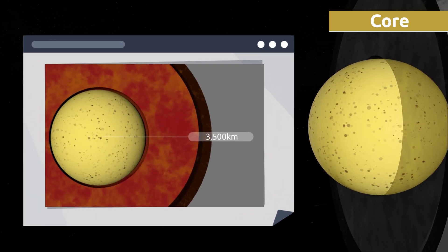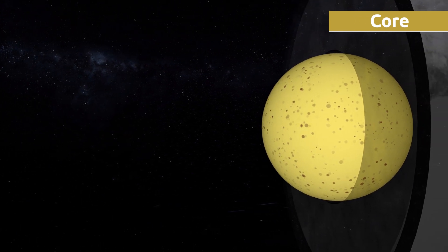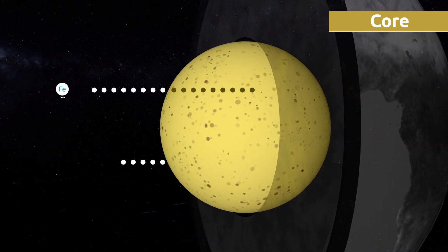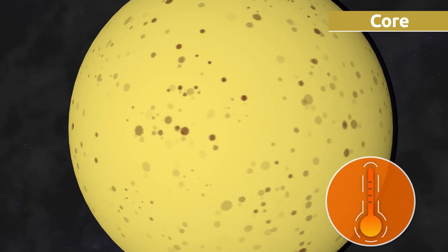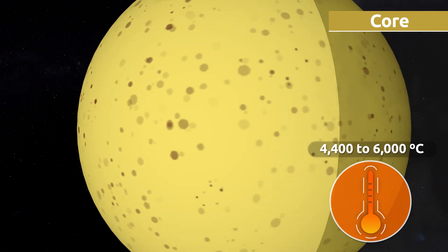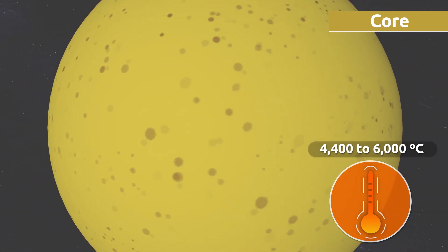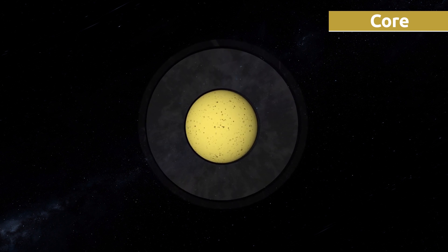The inner part of the core is made up of solid iron, while the outer part is made up of liquid iron and nickel. The temperature in the core is ultra high, ranging from 4,400 to 6,000 degrees Celsius.